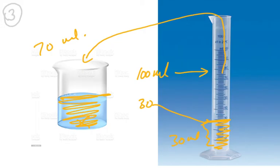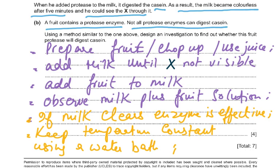Any one of those three methods would be acceptable for that mark. Moving to part (b): a fruit contains a protease enzyme, but not all protease enzymes can digest casein. Using a method similar to the one above, you must design an investigation to find out whether this fruit protease will digest casein.